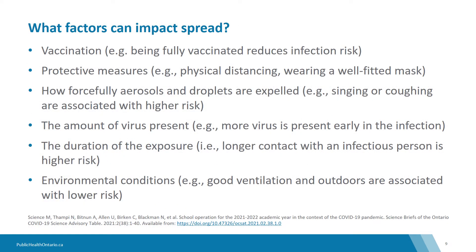When a person has infection, whether or not transmission occurs depends on multiple factors. These include vaccination — being fully vaccinated reduces infection risk; personal protective measures such as physical distancing and wearing a well-fitted mask; how forcefully aerosols and droplets are expelled, as singing or coughing are associated with higher risk; the amount of virus present, which is higher early in infection; the duration of exposure, where longer contact is higher risk; and environmental conditions, where good ventilation and being outdoors are associated with lower risk.